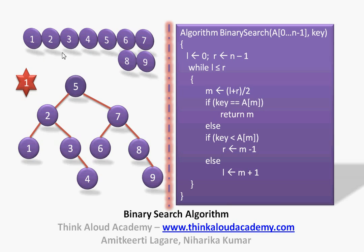We check whether element 1 matches A[M]=2. It does not. We check whether 1 is less than A[M]=2 — yes. So we set R = M-1. Now both L and R point to index 0, element 1. We go back into the while loop and compute M = (L+R)/2 = (0+0)/2, still pointing to element 1. We check whether key 1 matches A[M]=1 — yes, it matches. We have a successful match. We exit the while loop and return M, which is the index of the found element.